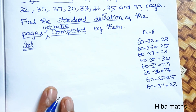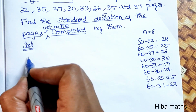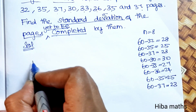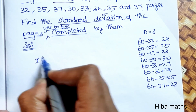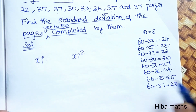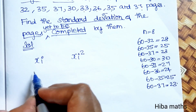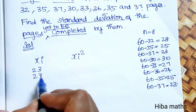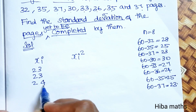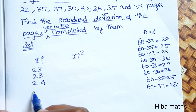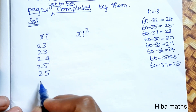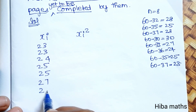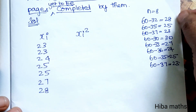We will set up a table. The column xi has values: 23, 24, 25, 27, 25, 28. We will now take this table column for xi and xi square.